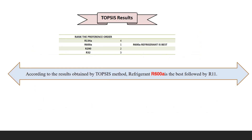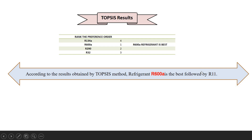Here are the results from the TOPSIS MADM method. From TOPSIS, R600A is also the best refrigerant and is ranked first. According to the results obtained by the TOPSIS method, refrigerant R600A is the best, followed by R11. R11 appeared in our first calculations, and then we changed the attributes and alternatives for this MADM method. Now we confirm that R600A is the best refrigerant for the domestic refrigerator.